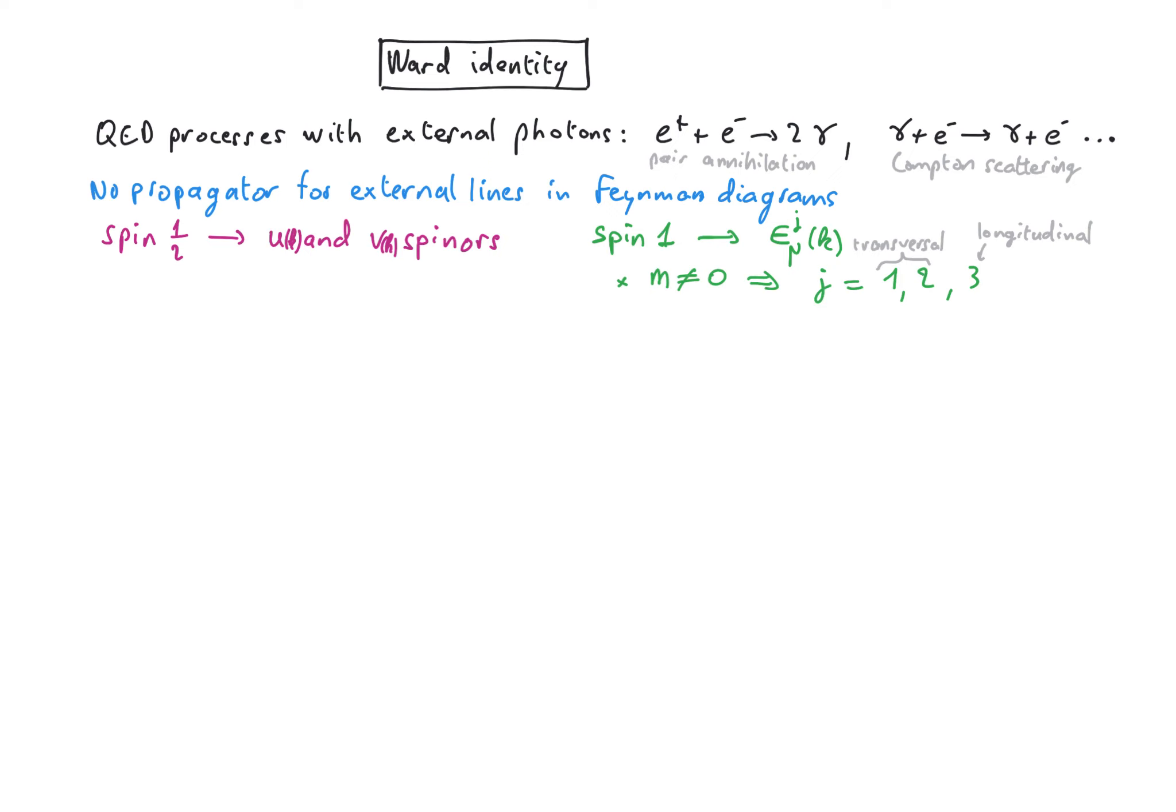And then we saw that in the case of a massless particle only the transversal polarizations are physical due to the gauge invariance we have of the Maxwell Lagrangian which is only here when the mass is zero.